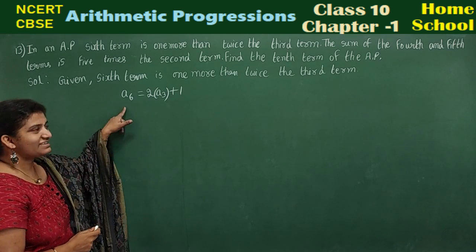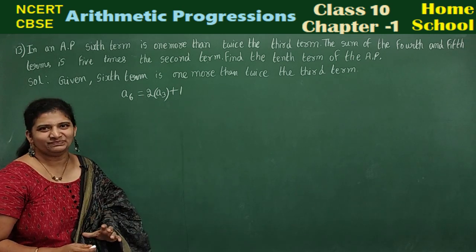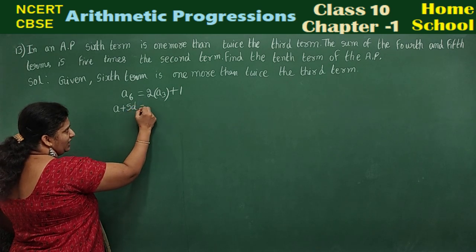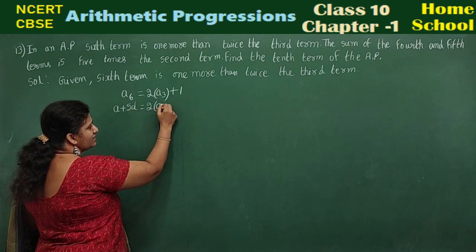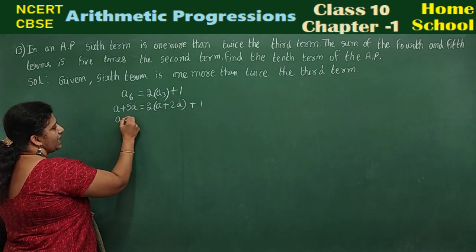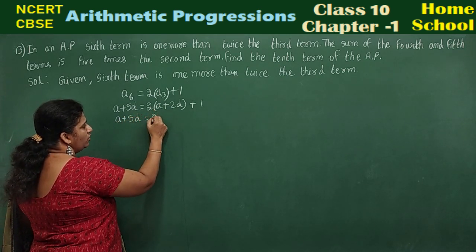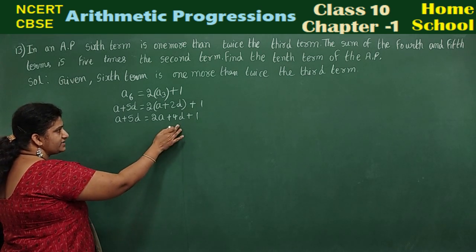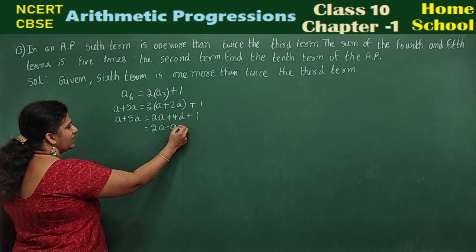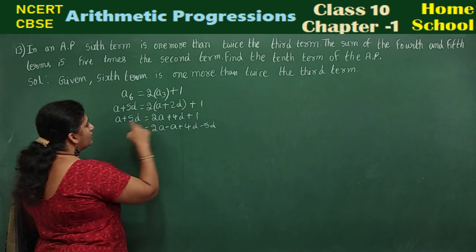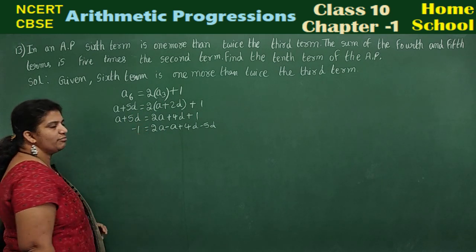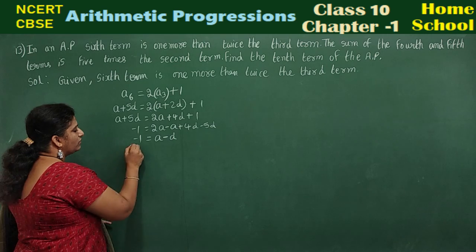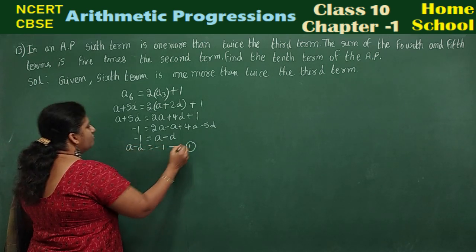Let me read again: sixth term is one more than twice the third term. Let us write this in general form. A6 can be written as A plus 5D, is equal to 2 into A3, which can be written as A plus 2D, plus 1. Expanding: A plus 5D equals 2A plus 4D plus 1. Rearranging, A minus D equals minus 1. Mark it as the first equation.